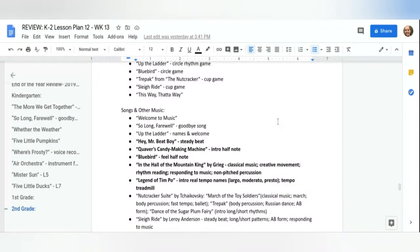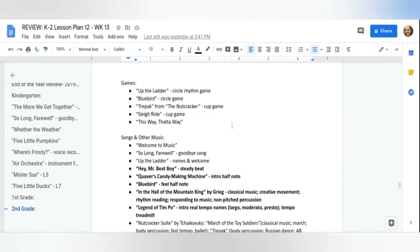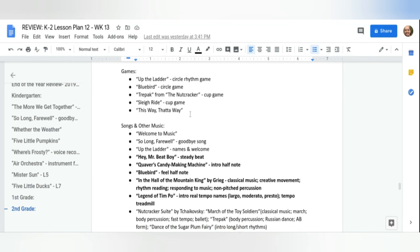Alright guys, we're just going to review the songs and the games that we did this year in music class, just to refresh your memory and make sure you remember what we did. So we did a game called Up the Ladder, Down the Ladder, which was like a drumming game to do some rhythms in the beginning of the year. We learned a song called Bluebird that helped us with our new half note rhythm and we did a game with that. We did two cup games, if you remember, back at the holidays. One was to a movement from The Nutcracker, and one was to a song called Sleigh Ride, which was where we were imagining being in a horse-drawn sleigh. And then when we came back from holiday break, we did a song called This Way, That Away.